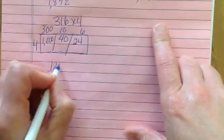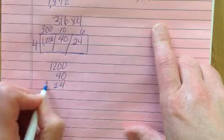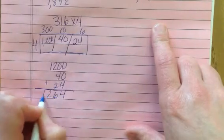So, we have 1,200, 40, and 24 to add. 4, 6, 2, 1. 1,264.